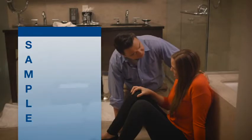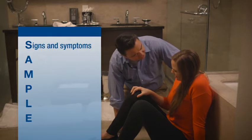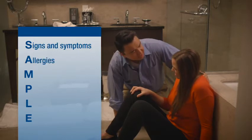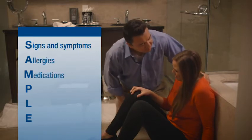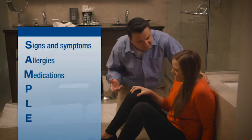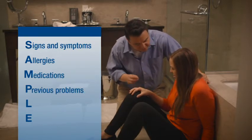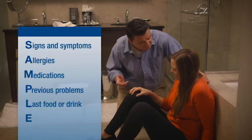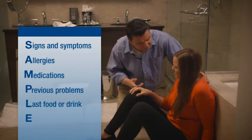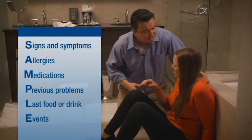Collect the victim's history. The SAMPLE history format can help you remember the kinds of questions to ask. S equals signs and symptoms. A equals allergies. M equals medications. P equals previous problems. L equals last food or drink. E equals events.